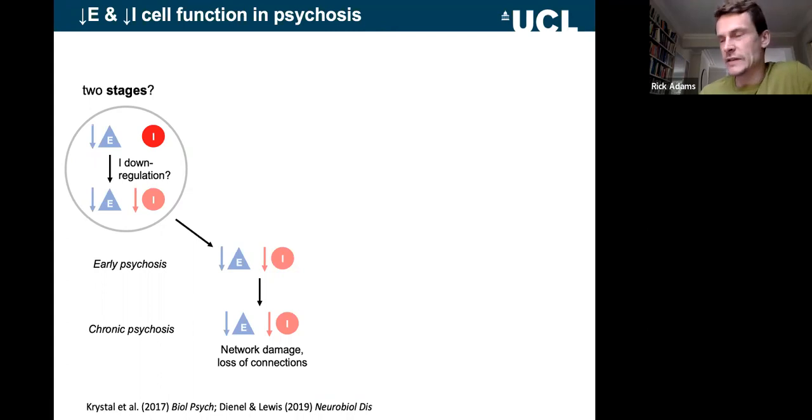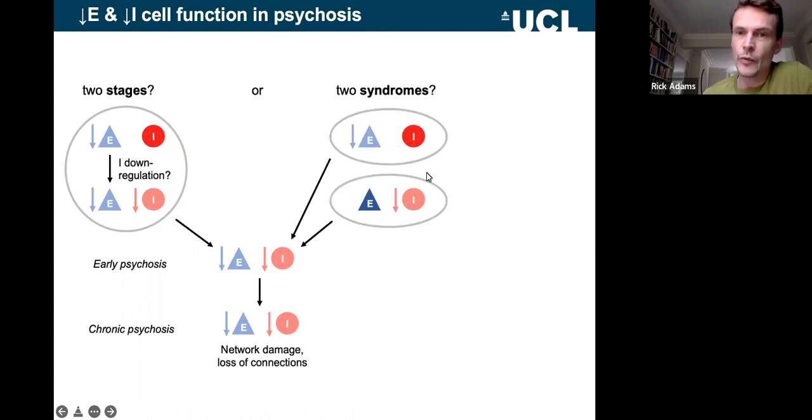However, this is definitely not knock down evidence of this and there could be other explanations. So for example, maybe we have heterogeneity in the population and you have some people who have this primary problem, a loss of excitability of pyramidal cells, and you have other people who have loss of excitability of interneurons and if you jumble them all up, they look a bit like this. And so really in future work, what we'd like to try to do is to discriminate between these two hypotheses.